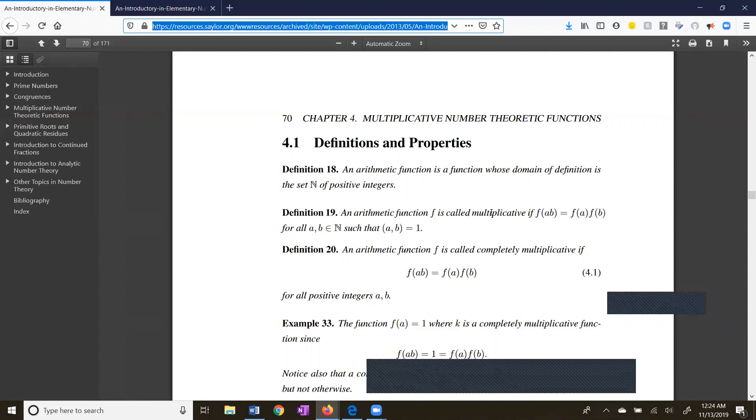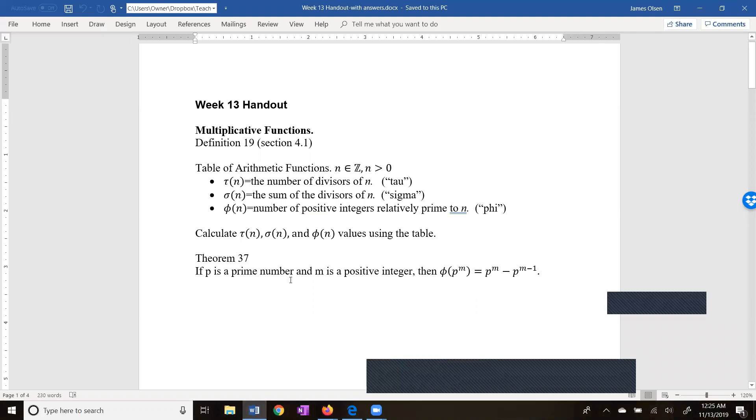So let's take a look at our handout. We've seen sigma of n earlier in the course. It's the sum of the divisors of n and sigma of n does include n itself. Phi of n we have also seen in the course. It's the number of positive integers relatively prime to n.